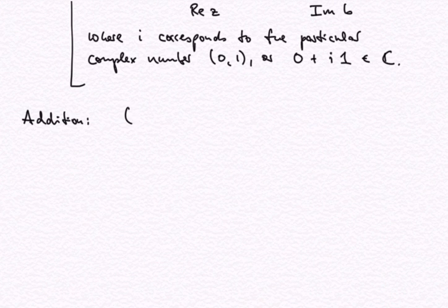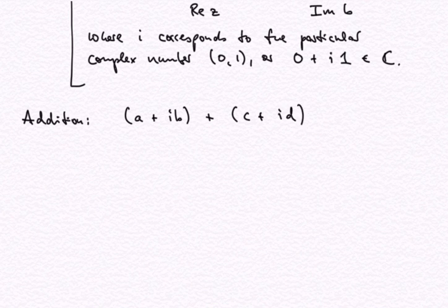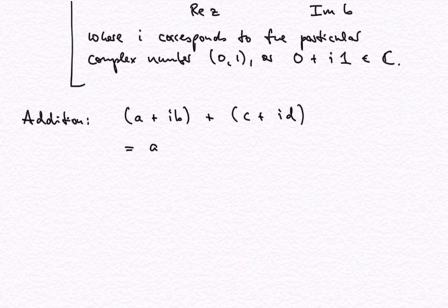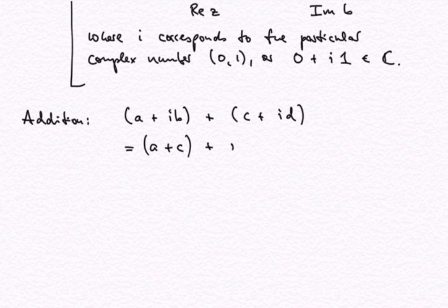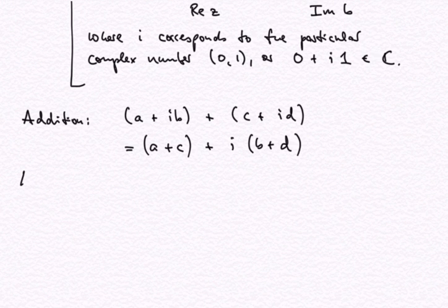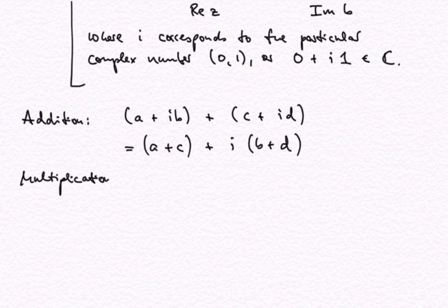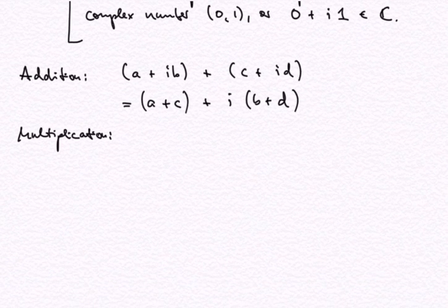If you want to add two complex numbers, (a + ib) plus (c + id), then we get the sum of the real parts plus i times the sum of the imaginary parts. So that's very straightforward.